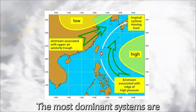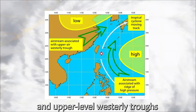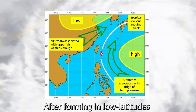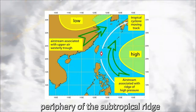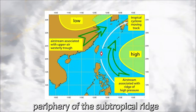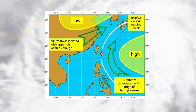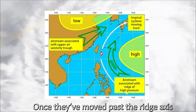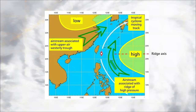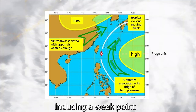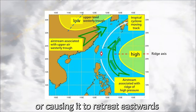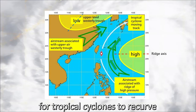The most dominant systems are the subtropical ridge of high pressure and upper-level westerly troughs in mid-latitudes. After forming in low latitudes, tropical cyclones generally move west to northwest along the southern periphery of the subtropical ridge. When they reach the western periphery of the subtropical ridge, they'll start adopting a northward track. Once they've moved past the ridge axis, they will recurve to the northeast. Upper-level westerly troughs may weaken the subtropical ridge, inducing a weak point or causing it to retreat eastwards, hence providing the chance for tropical cyclones to recurve.